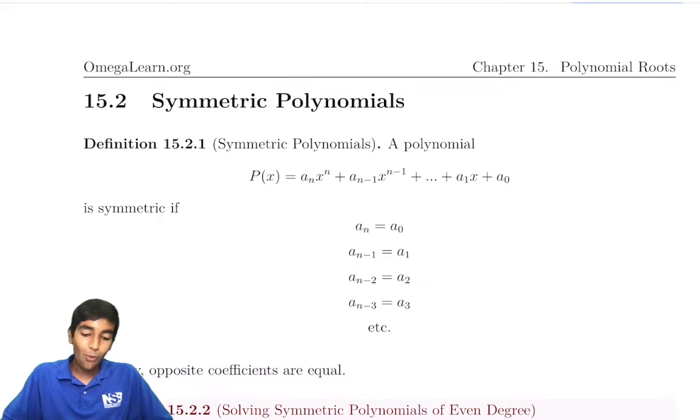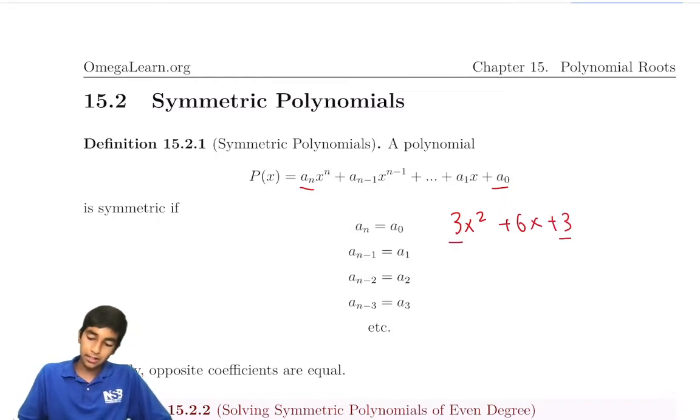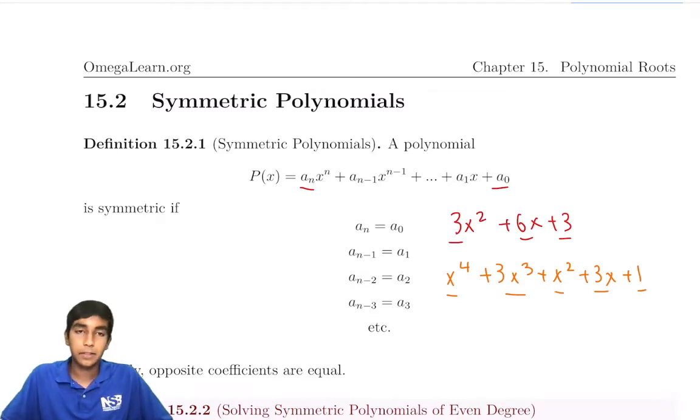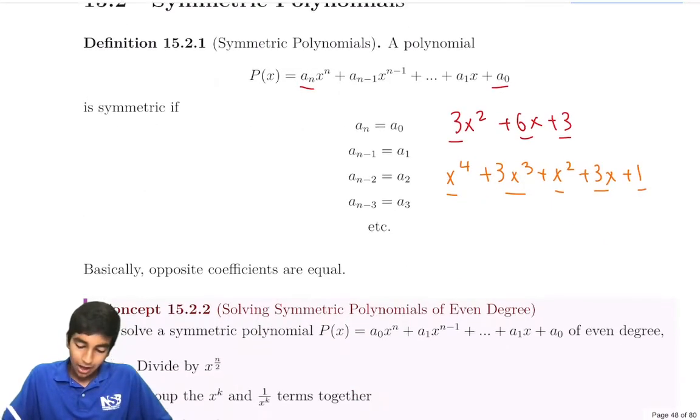So first of all, what is a symmetric polynomial? A polynomial with coefficients equal on both sides. Here's an example: 3x² + 6x + 3, because 3 is equal to 3 and 6 is equal to itself. It could also be bigger like this: 3x³ + x² + 3x + 1, where 1 equals 1 and the 3's match.